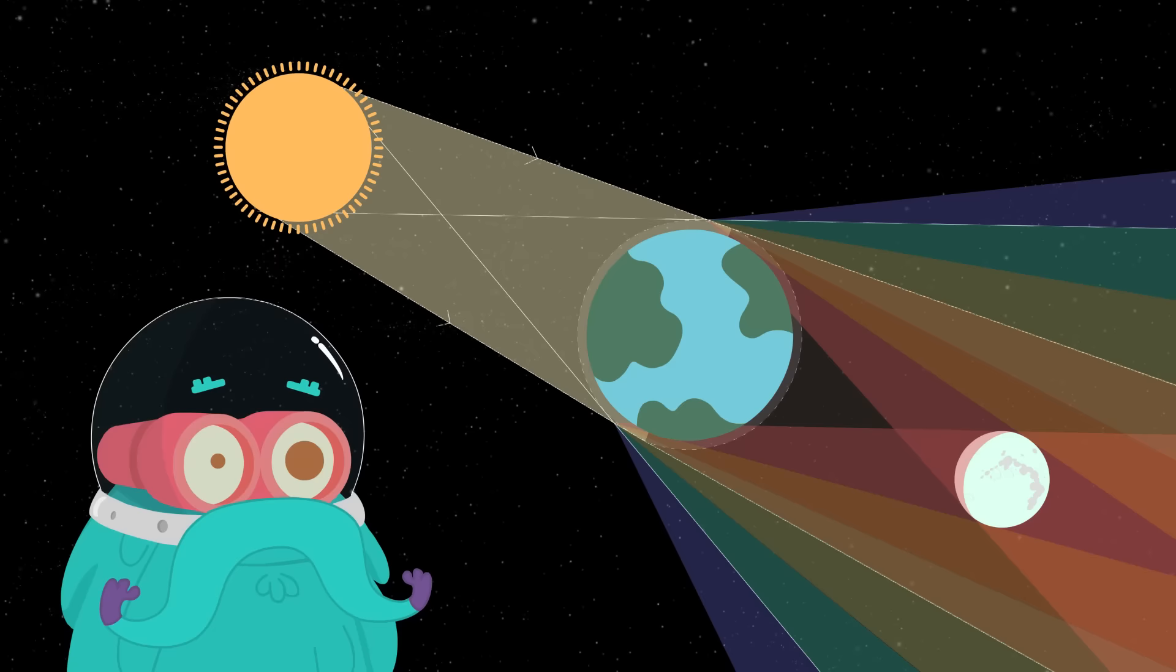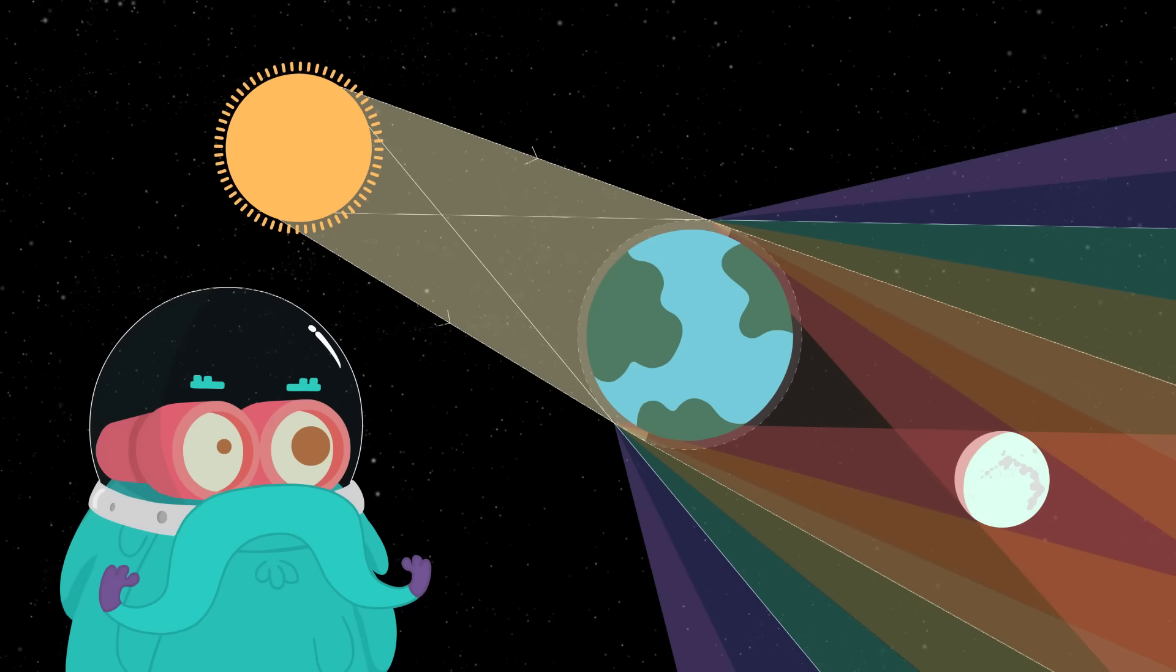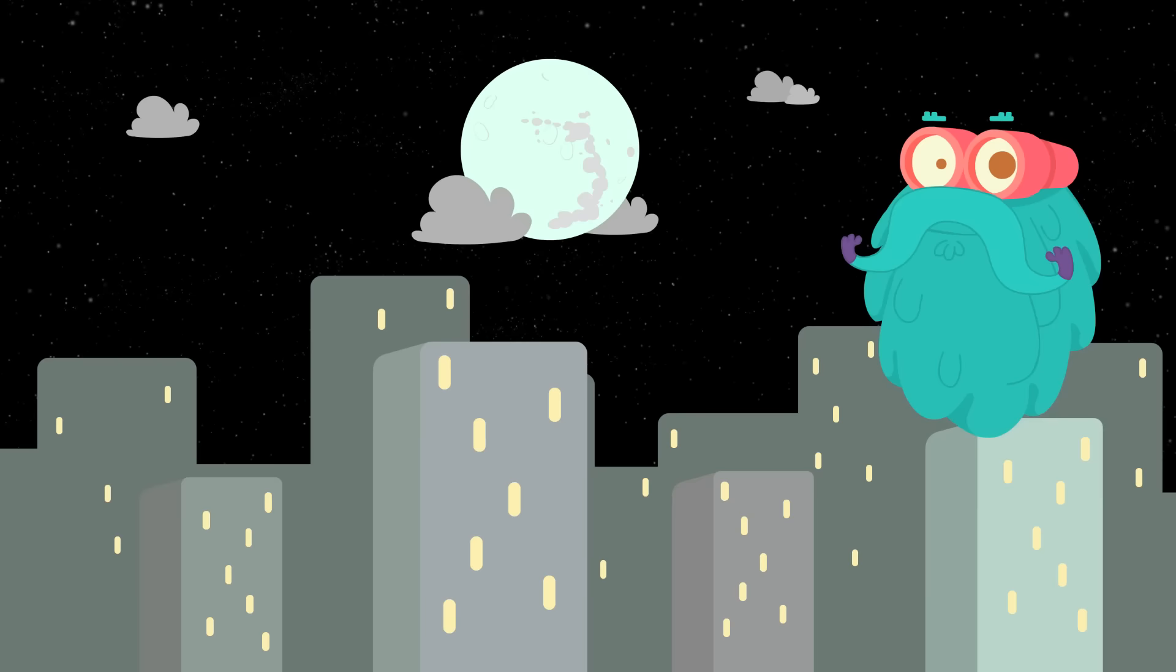When the Sun rays hit the atmosphere of the Earth, most of the colors get scattered away and the color red remains. Due to which we see a red or a blood moon during a total Lunar Eclipse.